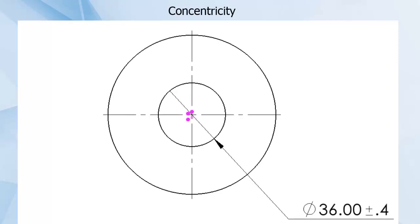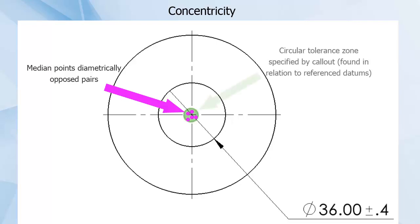When we finish, we would find a large number of median points, and if they all fell within the circular tolerance zone, then the concentricity control would have been met.